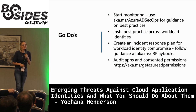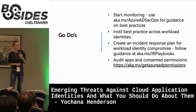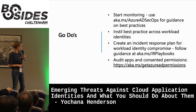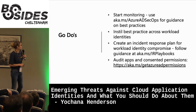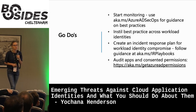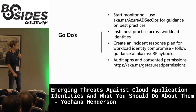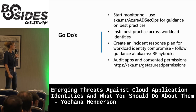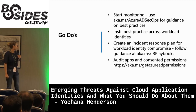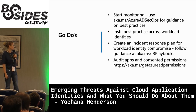The most important go-dos: please start monitoring actively - it's not good enough to just download logs, you need to actively monitor for anomalies, and we have guidance on that in our SecOps guide for non-human identities. Instill best practice across your workload identities - developers need to understand least privilege just as much as admins do. Create your incident response plan for workload identity compromise, as SOC teams often lack one for non-human identities. Audit apps and consent permissions within your tenants - we have a script that can do it for you.